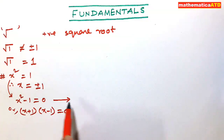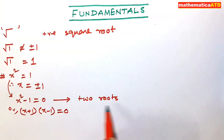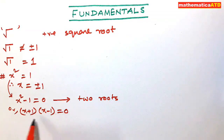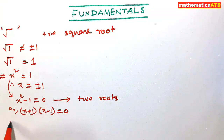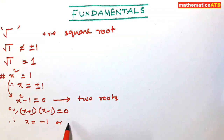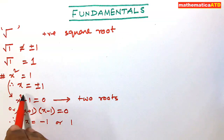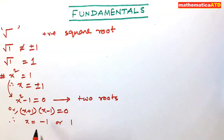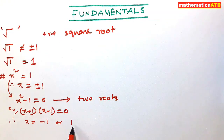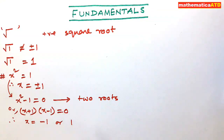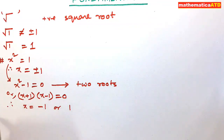x squared minus one equals zero is a quadratic equation, so from this you can get two roots — maybe all real roots or some real, some imaginary. Factorize: x plus one into x minus one equals zero. Either x plus one equals zero or x minus one equals zero, giving solutions minus one and plus one. This minus and plus comes from the quadratic equation because the degree of the polynomial x squared minus one is two. It does not indicate that root of one gives you minus one or plus one — root one gives you only one.